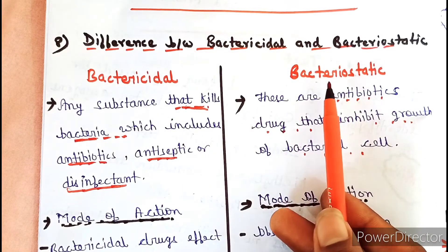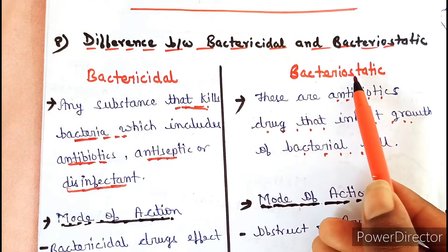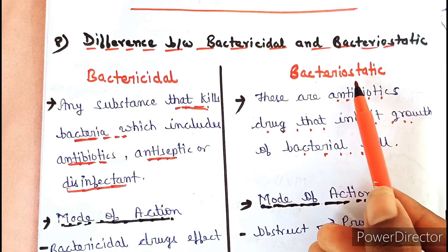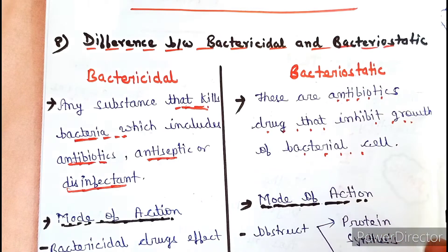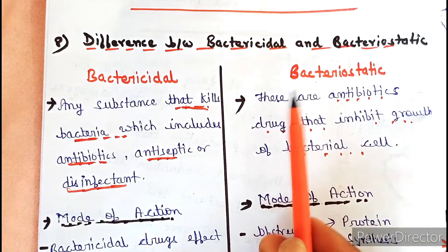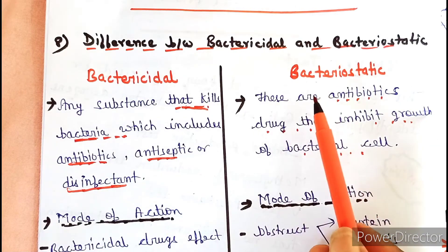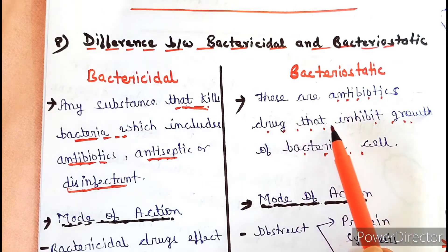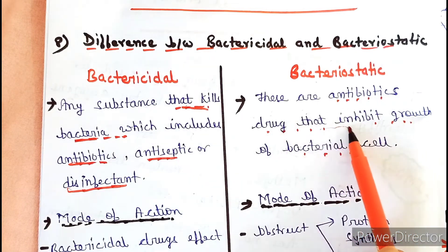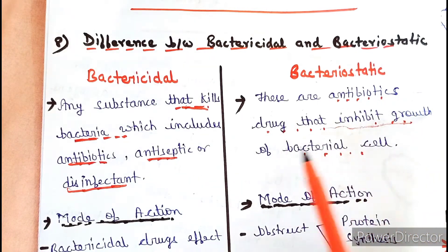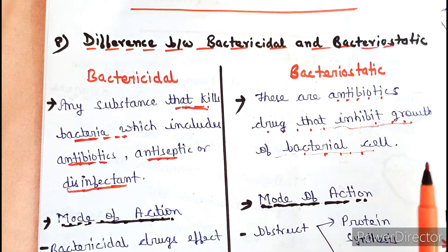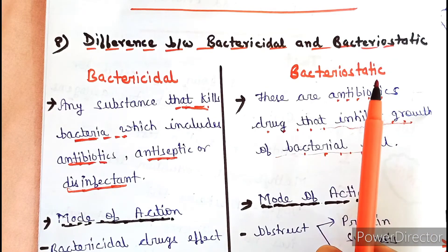Bacteriostatic means to arrest or stop — so bacteriostatic antibiotics are drugs that inhibit the growth of bacterial cells.